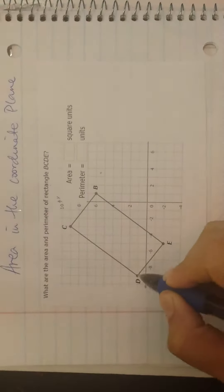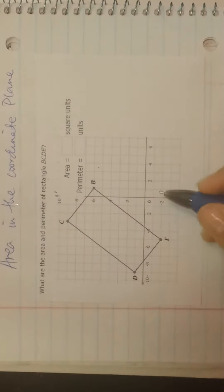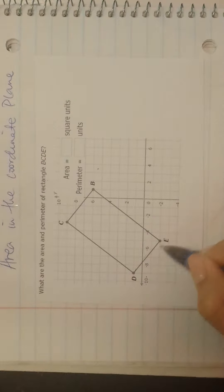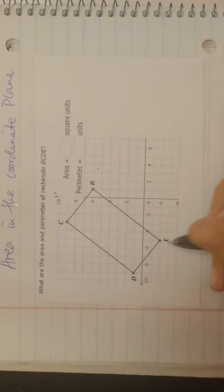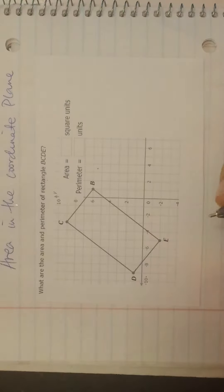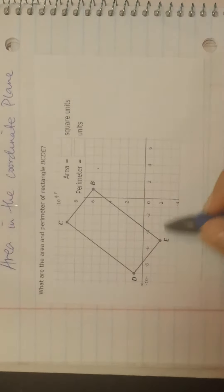Here's the base and here's the height. These lines are slanted, so I can't just count boxes. There are two ways of doing this: you could use the distance formula, or you can use the Pythagorean theorem. I'm going to use Pythagorean theorem just because I find it faster, especially once you practice you're going to get real good and real fast.